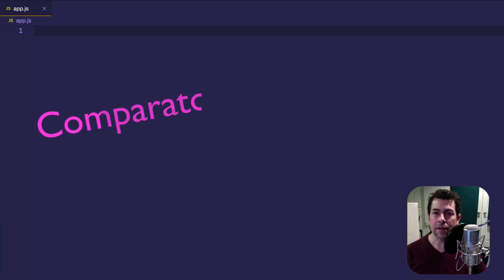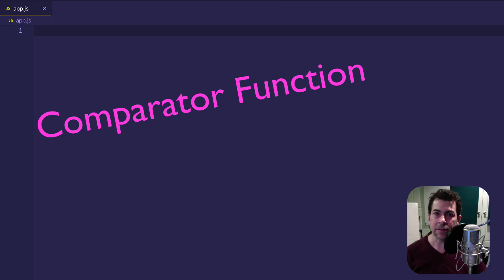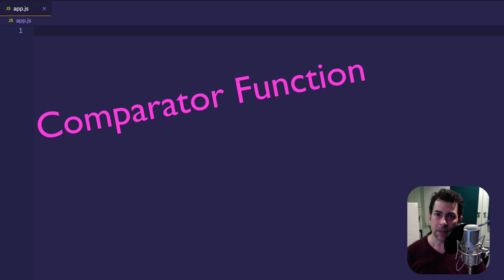Hey, everybody. In this video, we're going to take a look at the comparator function in JavaScript. The comparator function is the function that gets passed into JavaScript's built-in sort function. It allows us to take control of JavaScript's sort function to do things beyond just sorting strings in ascending order. When we pass in a comparator function, we can sort numbers in the correct order, sort the properties on objects, and much more. So let's get into the code.